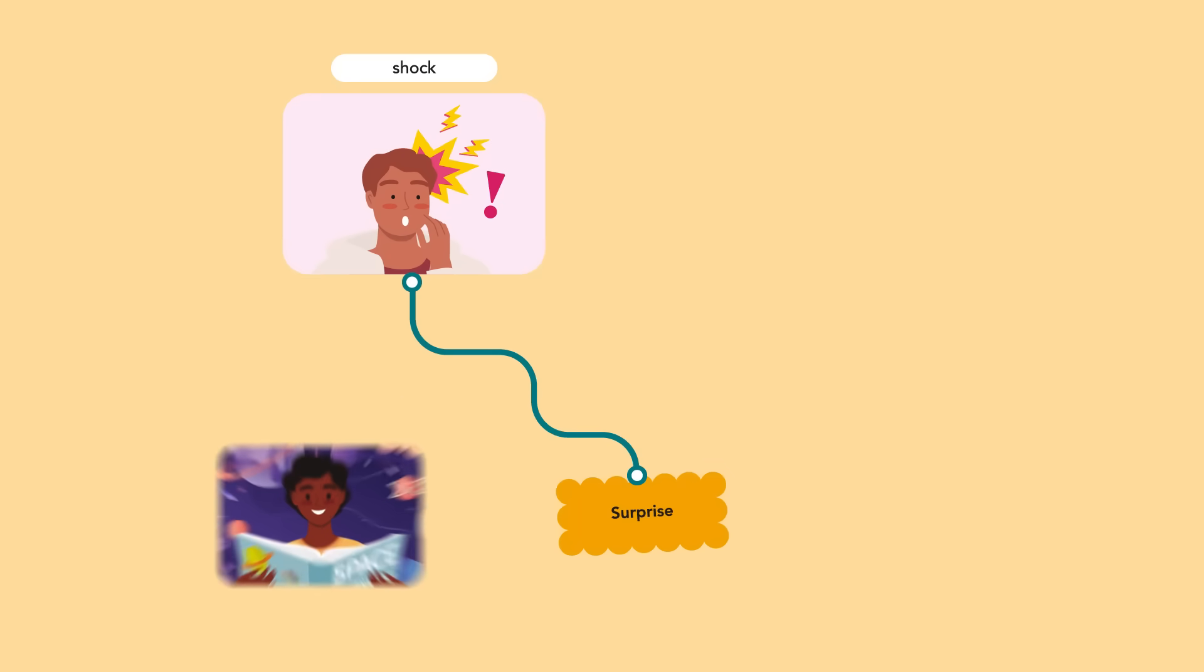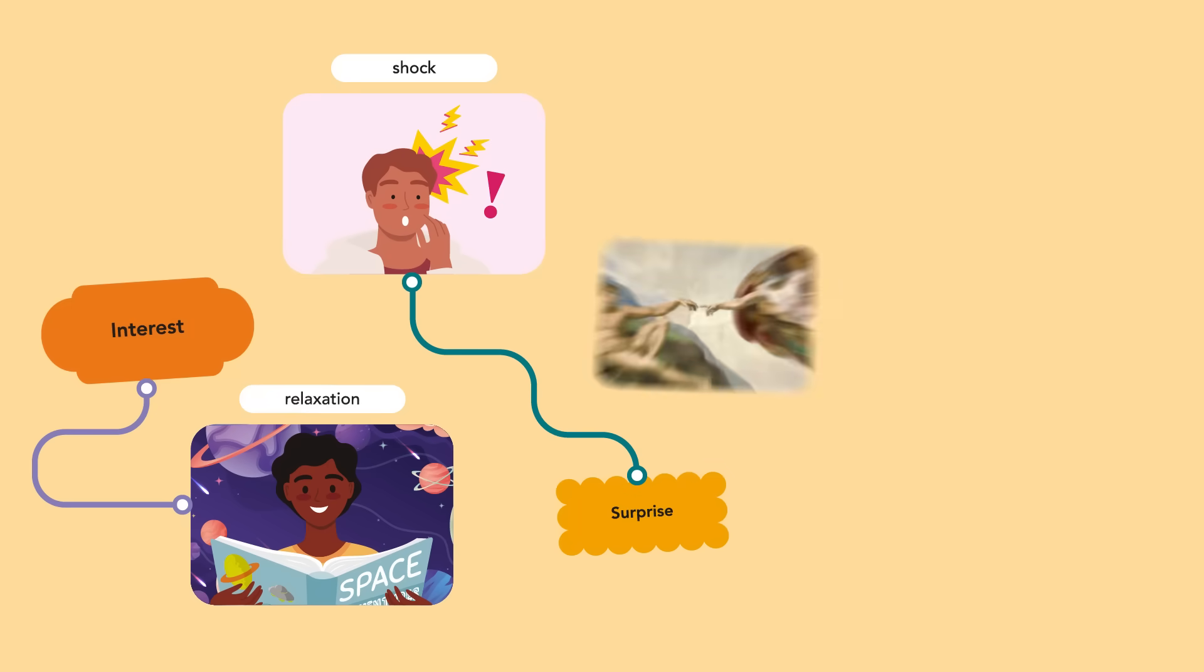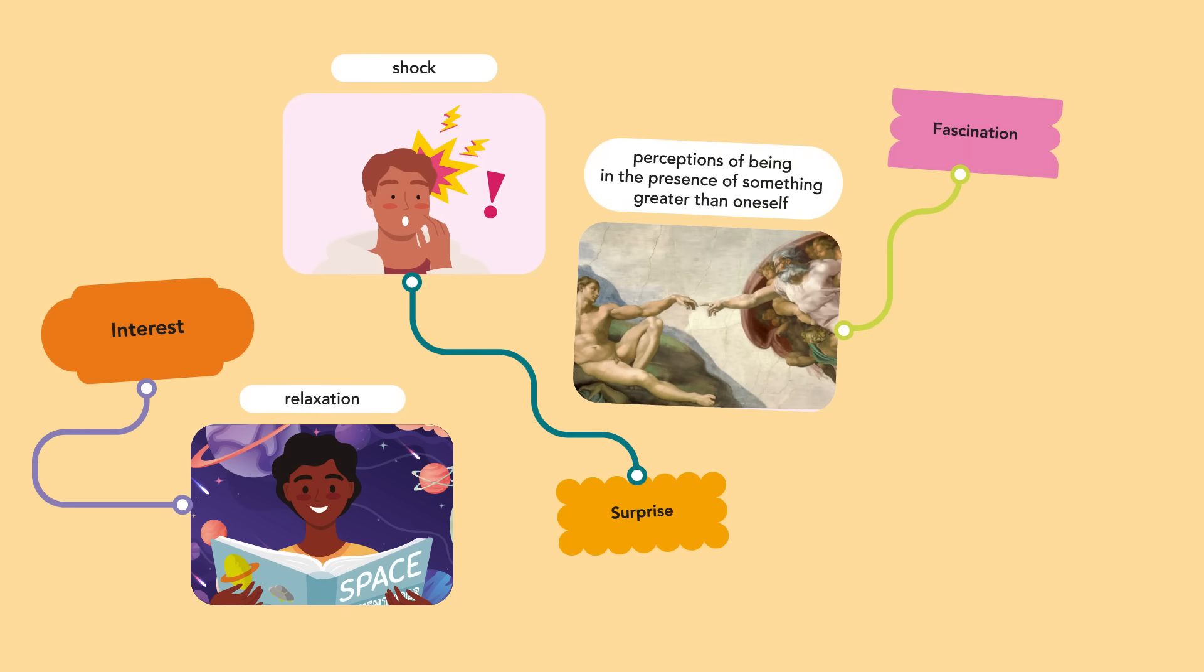The second family, named epistemic state emotions, include awe, wonder, interest and fascination. These emotions are associated with feelings of shock and relaxation, perceptions of being in the presence of something greater than oneself and slowed time perception.